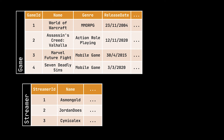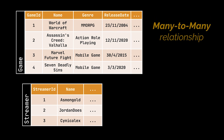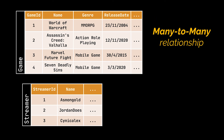Now, what about the streamer and game tables? A game can be streamed by one or several streamers, and a streamer can stream one or several games. You may be thinking this isn't similar to the one-to-many relationship we just discussed — and you would be right, as this is what we refer to as a many-to-many relationship.